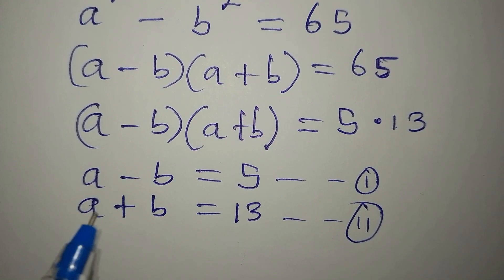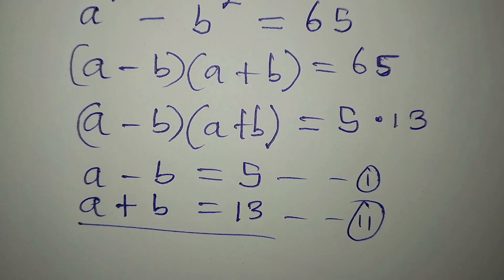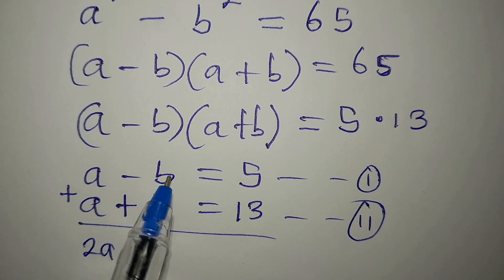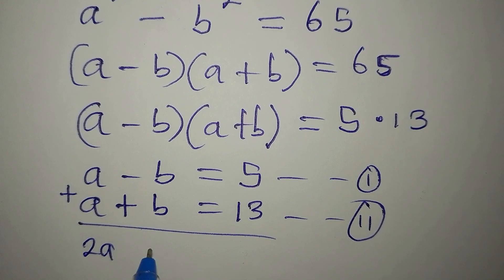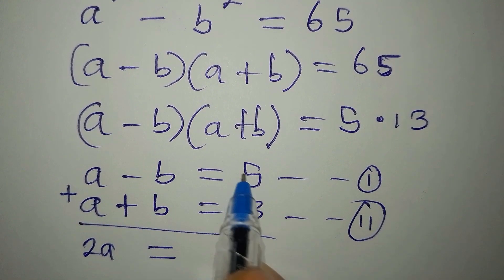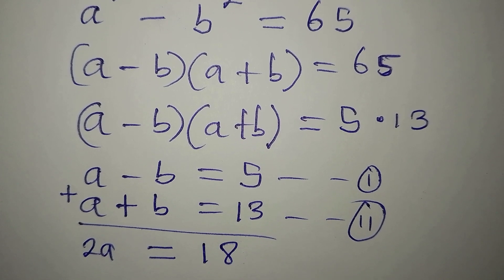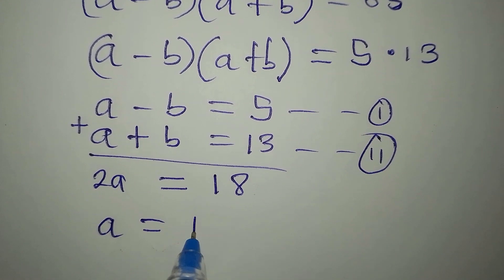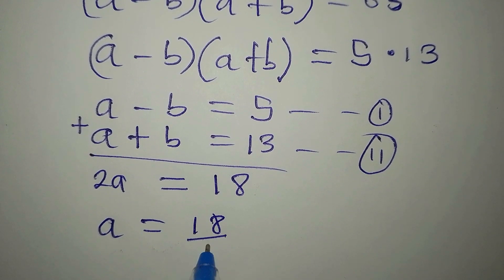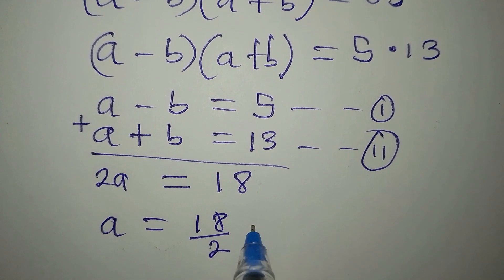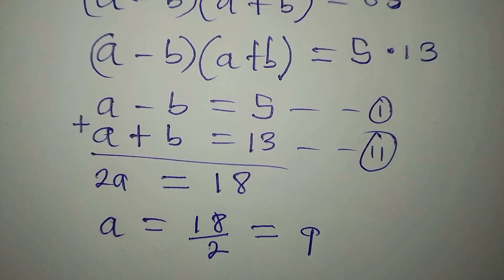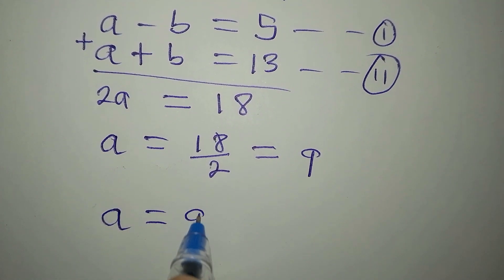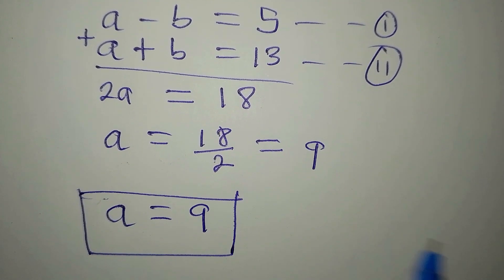We now have a simultaneous equation. Using the elimination method, if I add the two equations: a plus a gives 2a, minus b plus b cancels, and 5 plus 13 is 18. So 2a equals 18, meaning a equals 18 divided by 2, and a is equal to 9.